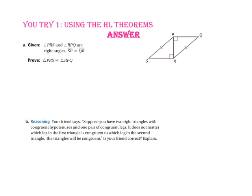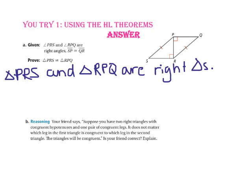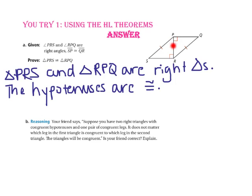Pause the video and do you-try number one. In part A, we work to prove that triangle PRS is congruent to triangle RPQ. Since angles PRS and RPQ are both right angles, triangle PRS and triangle RPQ are right triangles. It is also given that side SP is congruent to side QR. Since these sides are opposite the right angles, both hypotenuses are congruent. By the reflexive property of congruence, side PR is congruent to side RP. Since we have two right triangles with congruent hypotenuses and one pair of congruent legs, triangle PRS is congruent to triangle RPQ by the hypotenuse-leg theorem.